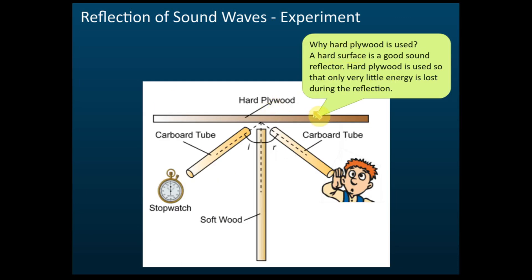The function of the hard plywood: we use hard plywood because a hard surface is a good sound reflector. For sound, it reflects better on a hard surface, so the hard plywood is used so that only very little energy is lost during the reflection.